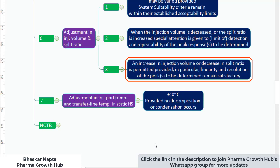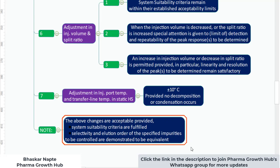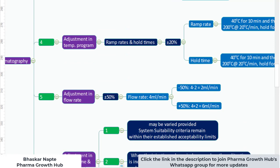An important note: whatever changes you want to propose, ensure that the above changes are acceptable only when system suitability criteria are fulfilled. Without meeting system suitability criteria, you cannot make any change. Additionally, the selectivity and elution order of specified impurities to be controlled must be demonstrated to be equivalent. If these conditions are met, you are free to make changes to gas chromatography parameters.